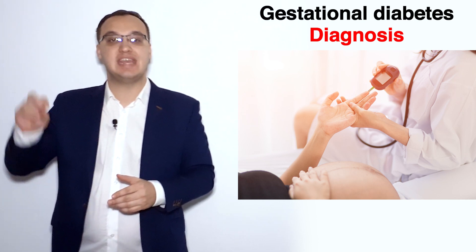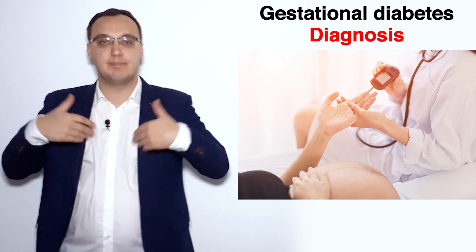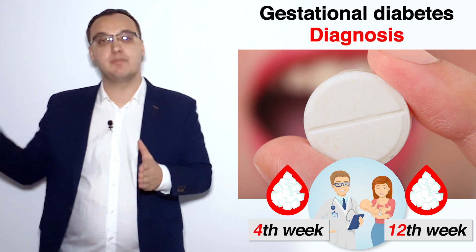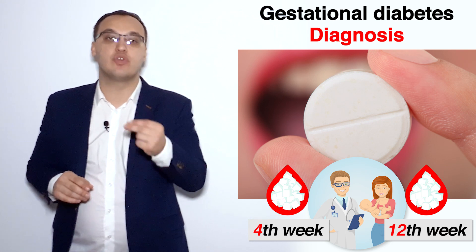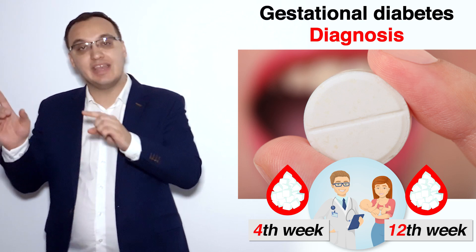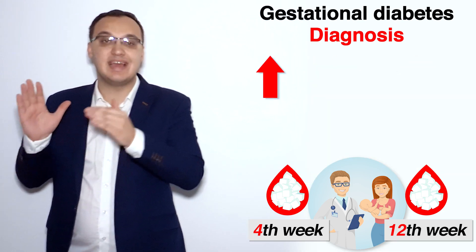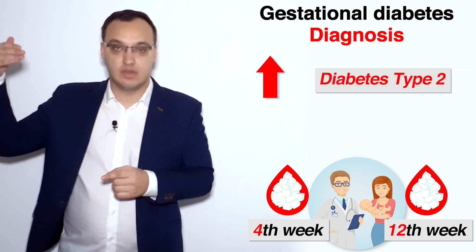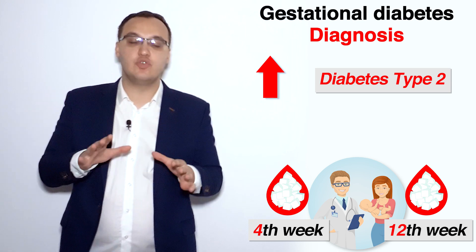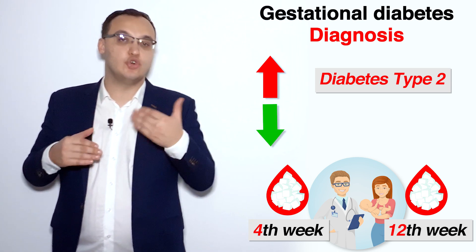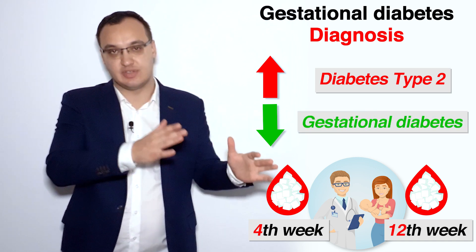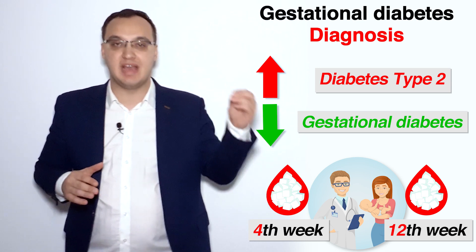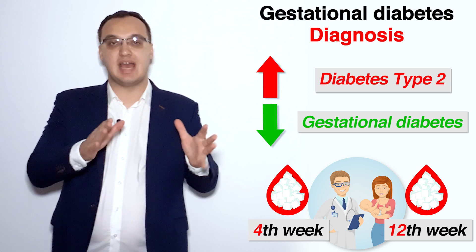After the pregnancy and birth, between the fourth and twelfth week postpartum, we check whether the oral glucose tolerance test levels are still high or have normalized. If still high, this suggests the patient actually has diabetes mellitus type 2 and we treat accordingly. If the value is normal, the patient had gestational diabetes only and no further treatment is needed — unless she becomes pregnant again, in which case the risks will be high.